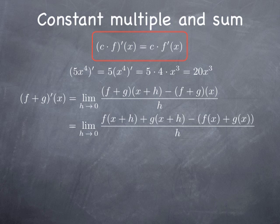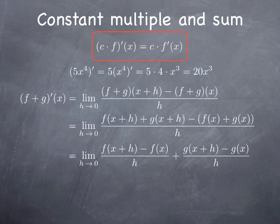If we reorder the terms, we obtain the limit of f of x plus h minus f of x over h to which we add g of x plus h minus g of x over h. Both terms have a limit. The first one tends to f prime of x, the second to g prime of x.